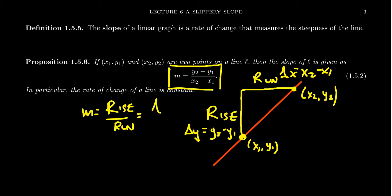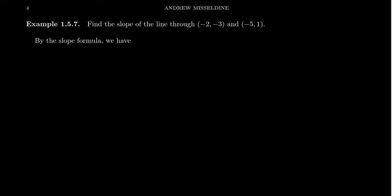Or in other words, it's this delta y over delta x. That's how we calculate the slope of any line. So as a very simple example of that, let's take a line which passes through the points negative 2, negative 3, and negative 5 comma 1.